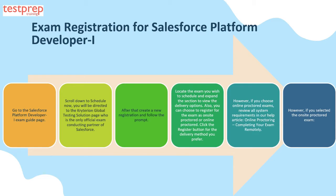If you selected the online proctored exam, then select the date and time you would like to take the exam, read the reschedule and cancellation policy, and select the acknowledgement checkbox. Note that all online proctored exams are automatically adjusted to the time zone of the location you inputted. Finally, make the payment and complete your registration.